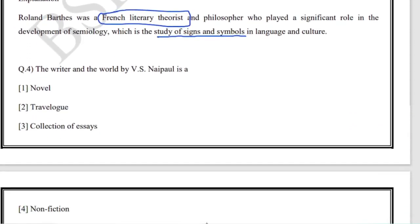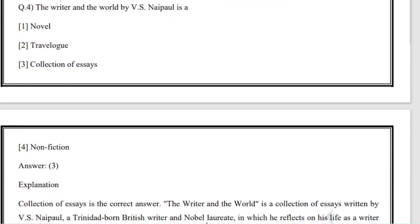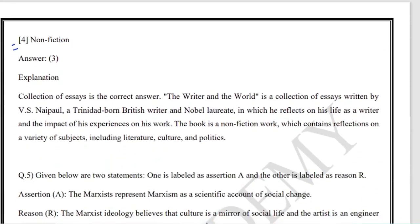Next: The Writer and the World by V.S. Naipaul is what? You must know the background of the work. The options are novel, travelogue, collection of essays, or non-fiction. The answer is collection of essays.